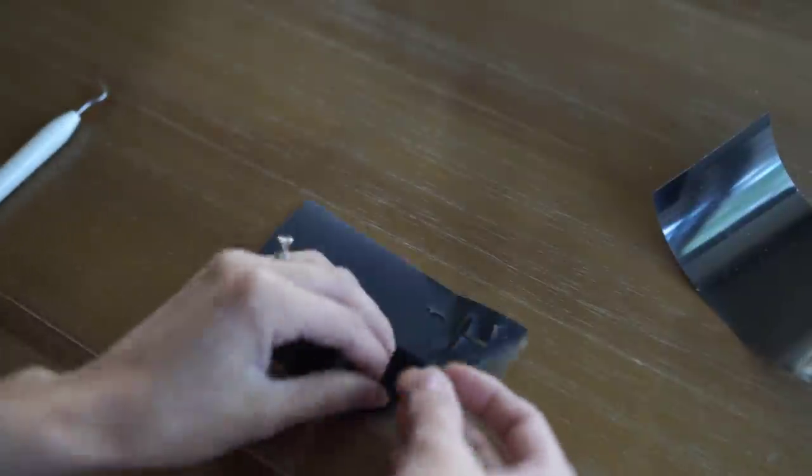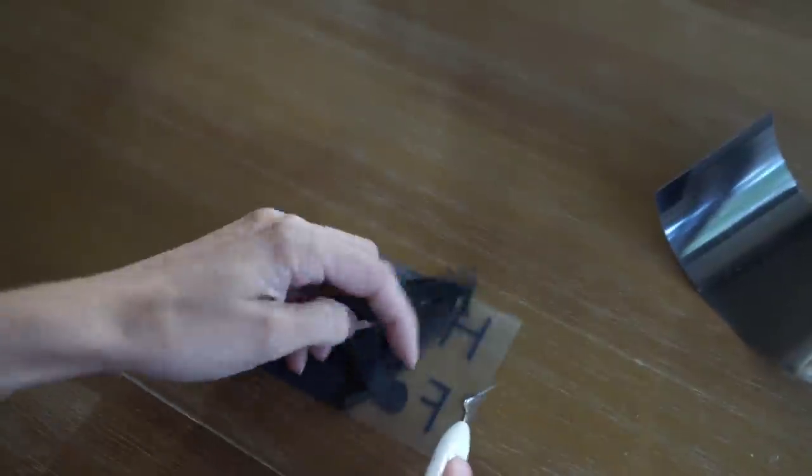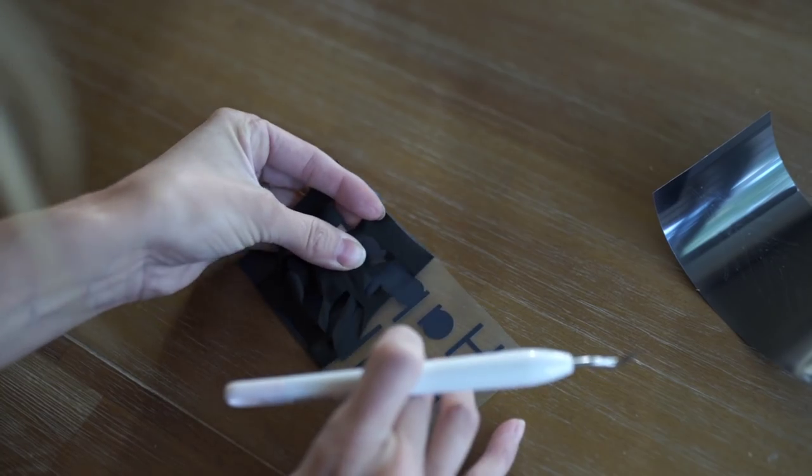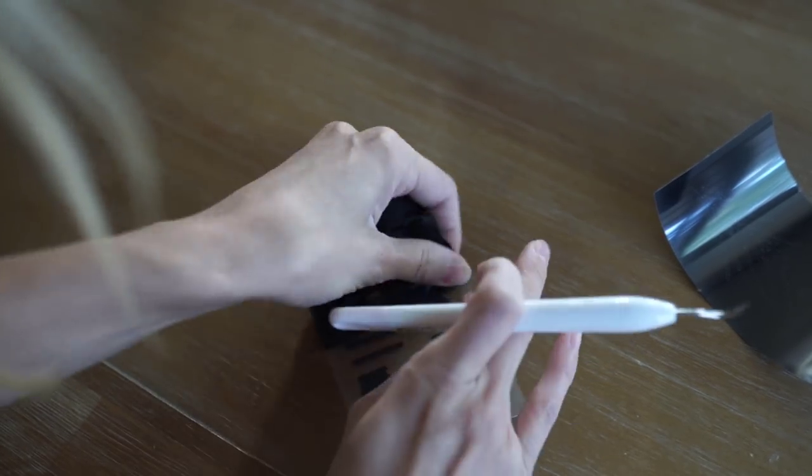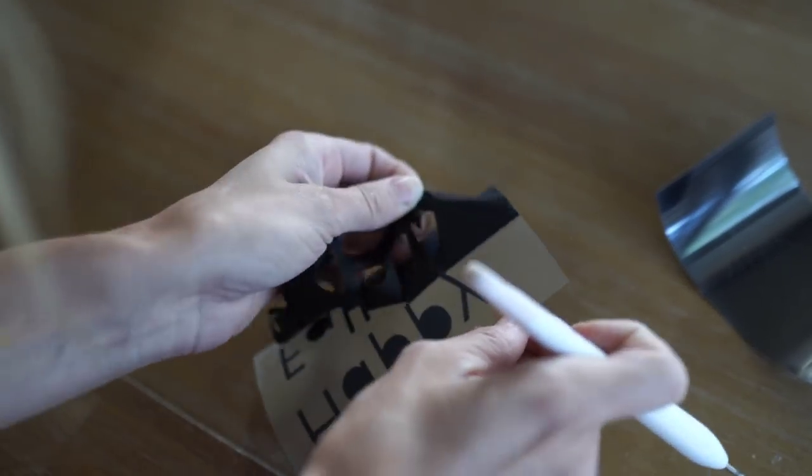So in order to prep this for the towel, I just have to remove the backing using the little Cricut weeding tool. I will link that for you guys down below. It makes it really, really easy to pick through all those little centers. And then it's ready for iron-on.